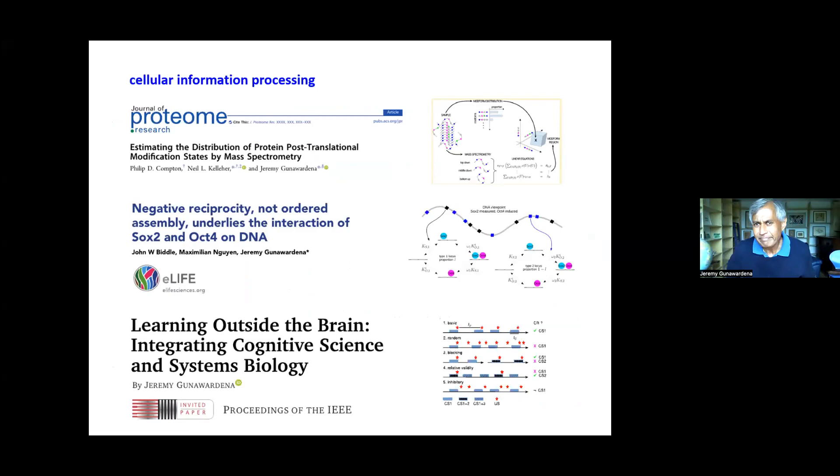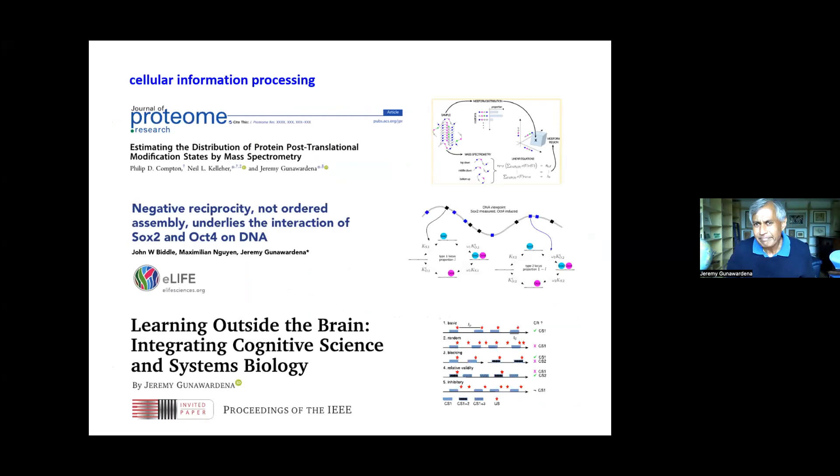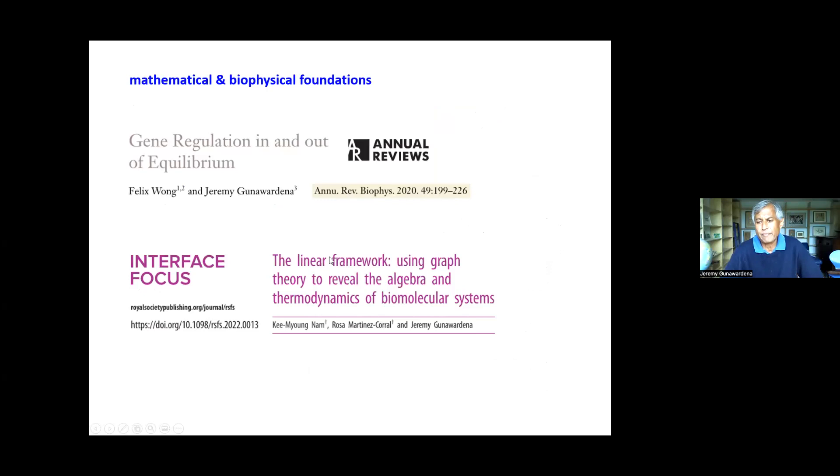By way of introduction, my lab studies information processing mostly in mammalian cells and we focus on particular mechanisms of information processing such as post-translational modification and gene regulation. More recently we've developed an interest in the question of learning in cells. Together with these biological focus areas, we've devoted a lot of time and attention to developing the mathematical and biophysical foundations for studying those kinds of mechanisms and processes in biology.